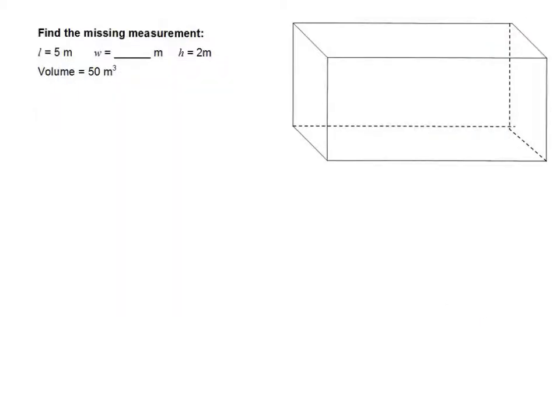So here we have my favorite type of problem. It's to find the missing measurement. They give us the length is 5 meters, the width is unknown, and the height is 2 meters. And the total volume is 50 meters cubed. So what you do with that is originally you're going to write your original formula. So since this one uses length and width and height, I can use this formula: volume equals length, width, and height. So let's go and label.